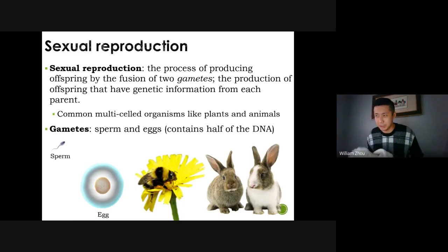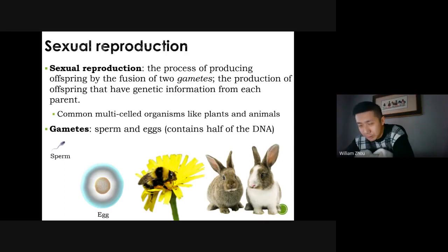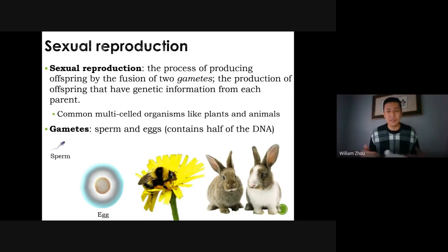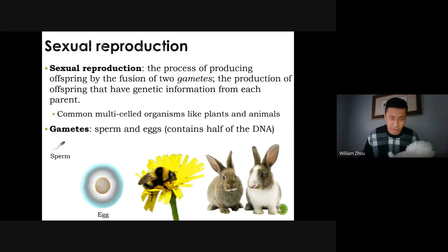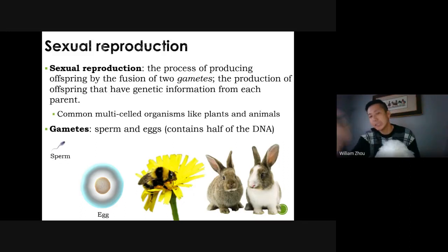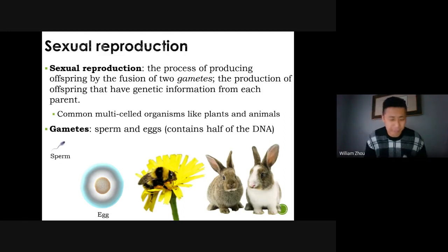Sexual reproduction requires the union of two gametes — sperm and egg. Whether you have sex or use in vitro fertilization doesn't matter; what matters is that the gametes came from two different individuals. As long as you get a sperm and an egg from someone else, that is sexual reproduction.